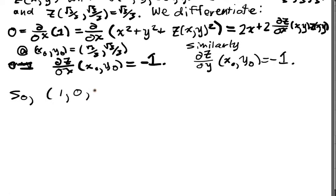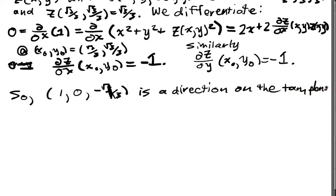So (1, 0, -√3/3), or rather 1, is a direction on the tangent plane. And so is (0, 1, -1). So this I obtained by taking the partial with respect to x of (x, y, z(x,y)). This I got by taking the partial with respect to y. And those give me tangent directions of my sphere at that point.